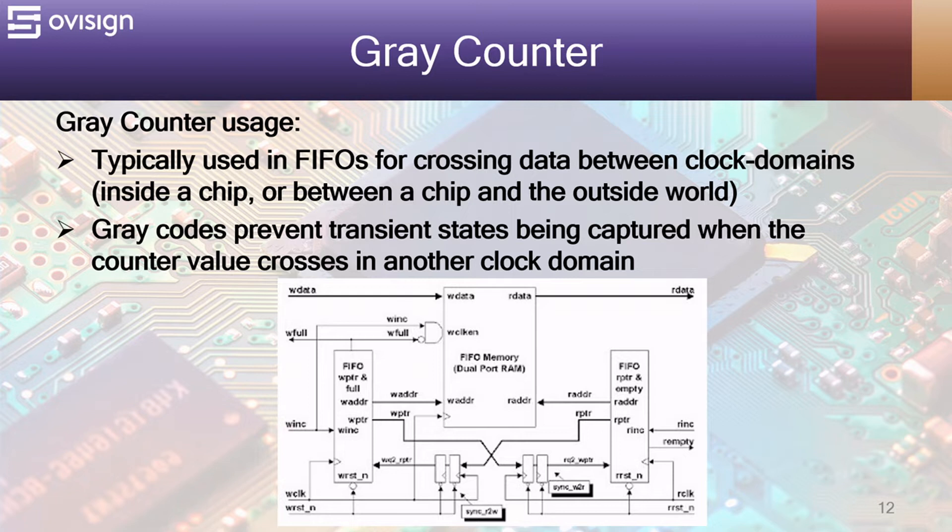Typically a gray counter is used in FIFOs for crossing data between clock domains, which may be inside the chip or between the chip and the outside world. Gray codes prevent transient states being captured when the counter values cross in another clock domain.